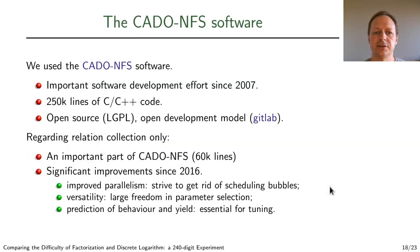Now on to software resources. To do these records, we use the CADO-NFS software, which we have been developing in Nancy since 2007. It's a huge piece of software. It's open source, LGPL licensed. It's an open development model. Regarding relation collection, it's a huge part of CADO-NFS which has undergone many improvements in the last four years relating to parallelism, or to the freedom of choice that we have for the parameters. We have many improvements that are pretty recent related to our capacity to predict the runtime and to assess the validity of some parameter choices.